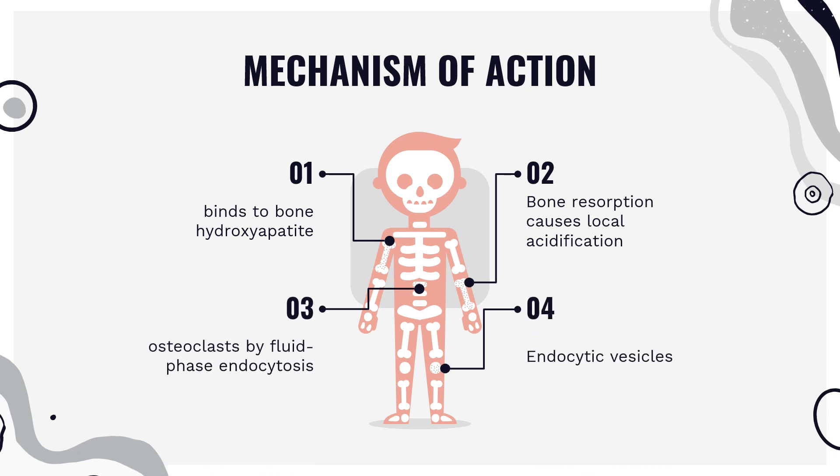Mechanism of action: Alendronic acid binds to bone hydroxyapatite. Bone resorption causes local acidification, releasing alendronic acid, which is taken into osteoclasts by fluid phase endocytosis. Endocytic vesicles are acidified, releasing alendronic acid to the cytosol of osteoclasts, where it induces apoptosis.